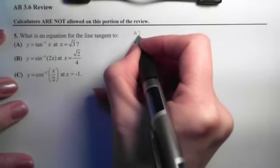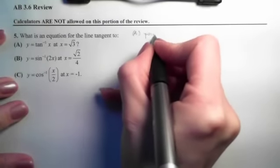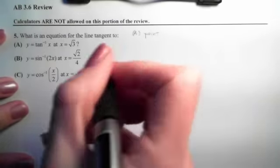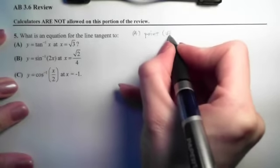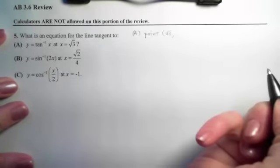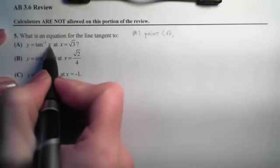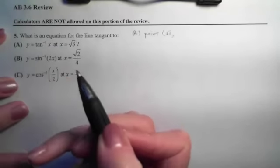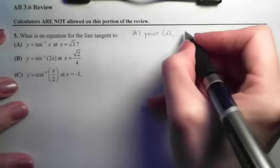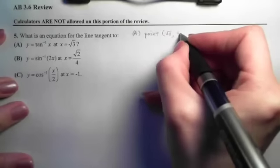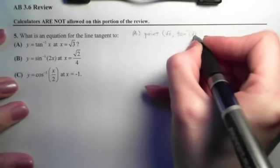First, let's talk about how we get the point. The point will have as its x-coordinate the value that is given to us. The y-coordinate comes from plugging this into the function that gives us the y-value. To get the y-value, we will have the tangent inverse of root 3.